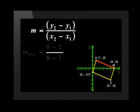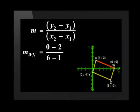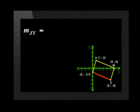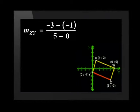So the gradient of WX is 0 minus 2 over 6 minus 1, which is equal to negative 2 over 5. The gradient of ZY is negative 3, negative 1 over 5 minus 0. That's also negative 2 over 5. So they have the same gradient, so that means that WX is parallel to YZ.